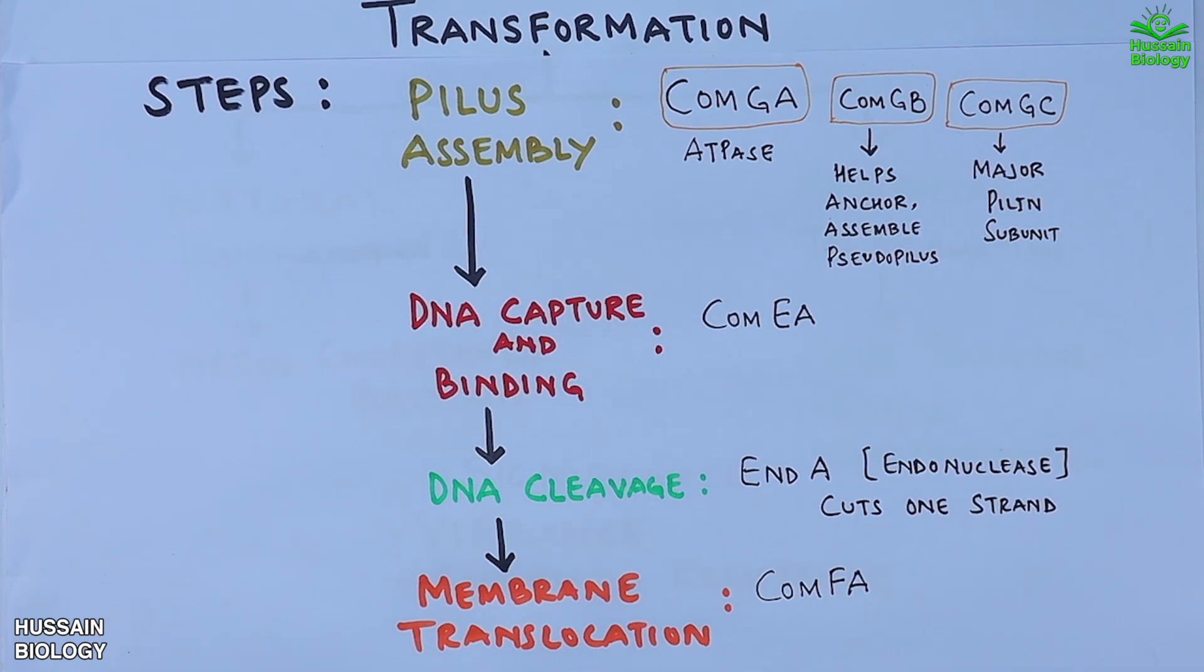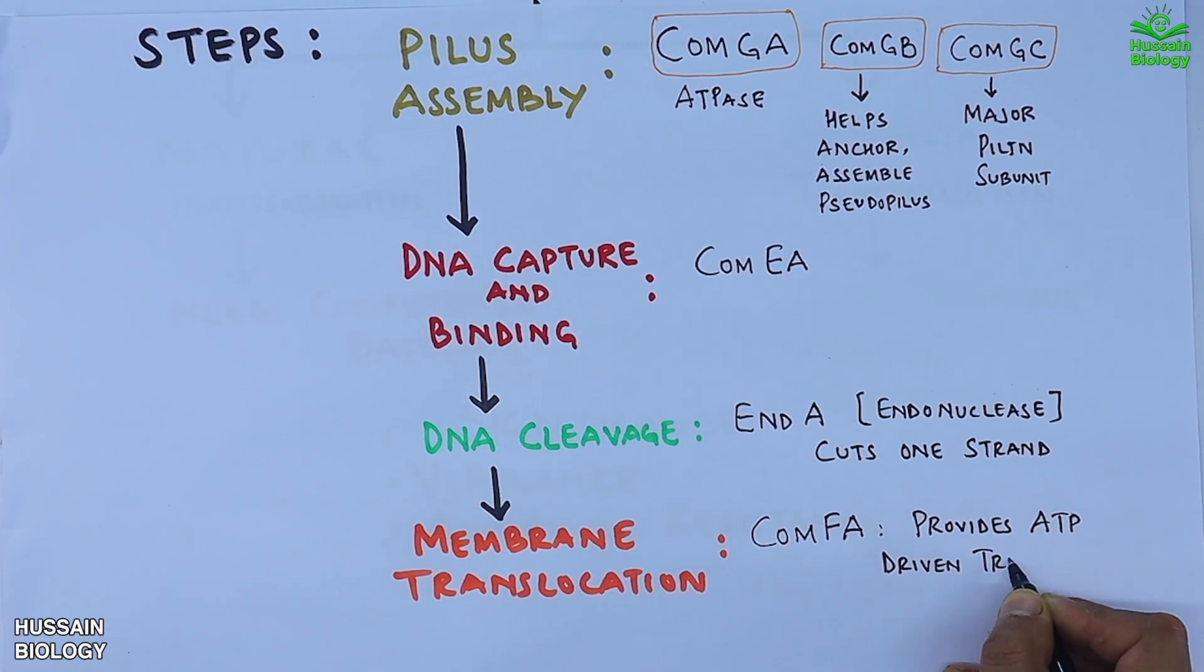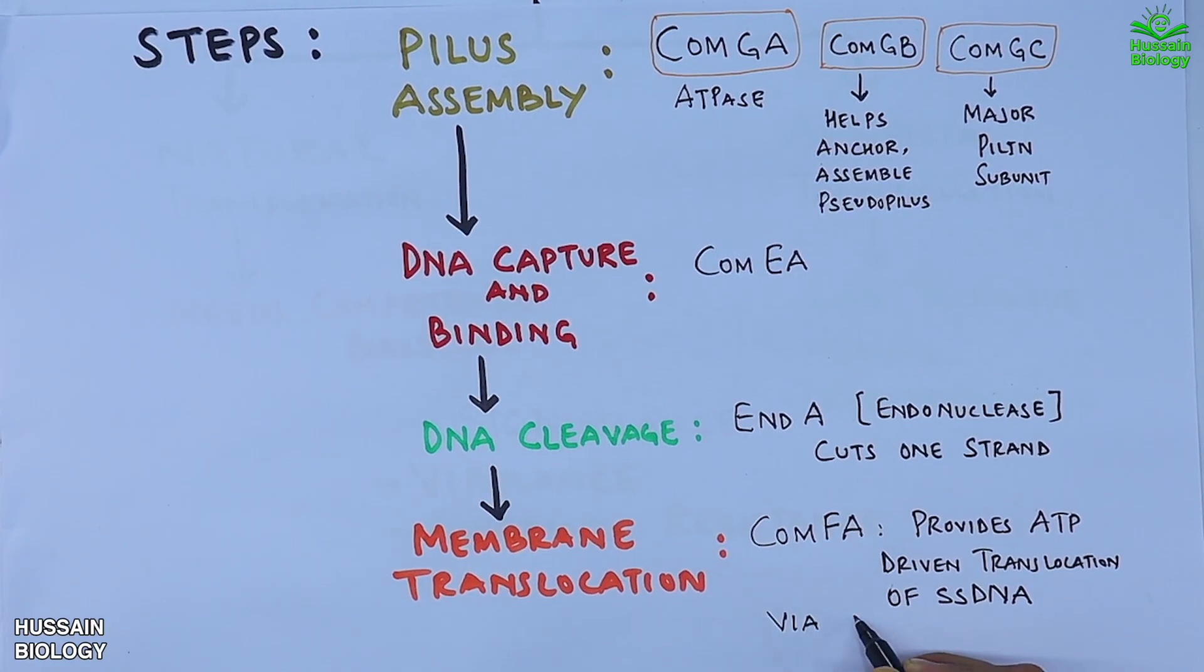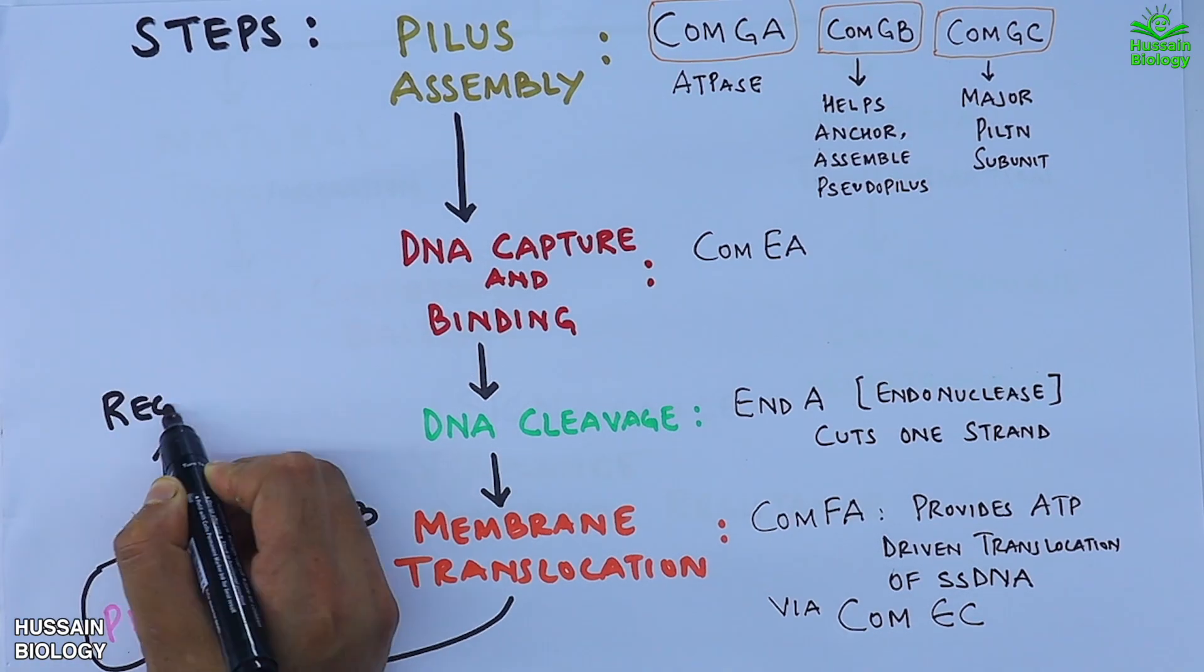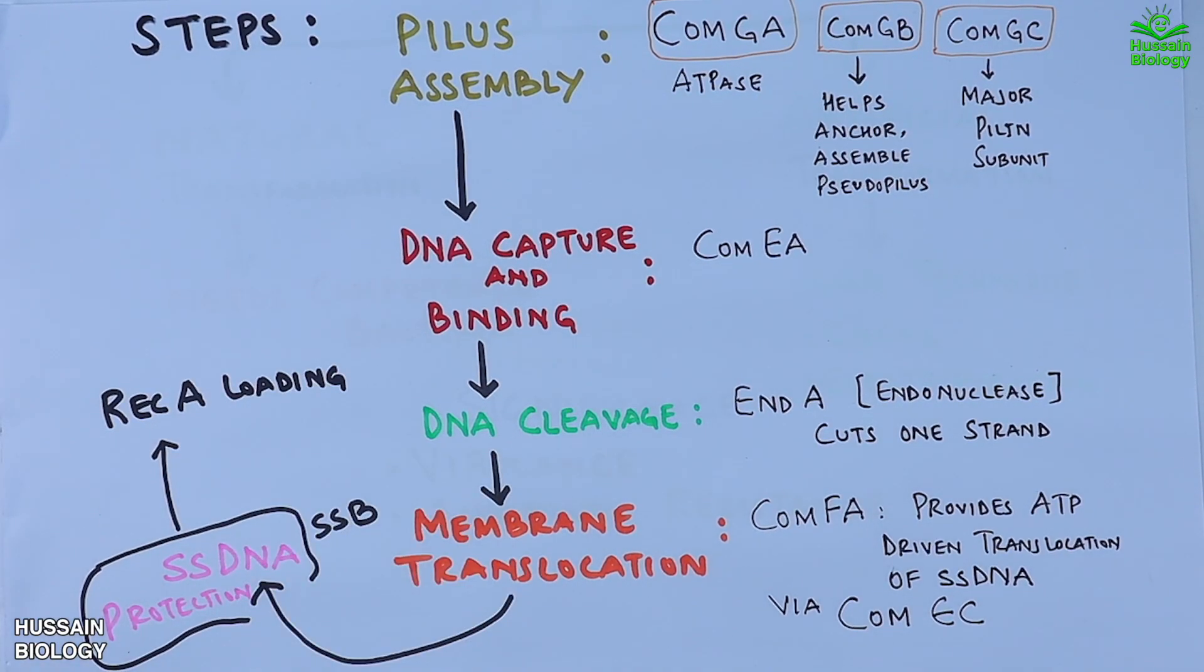Then we have ssDNA inside the cell which is protected by SSB proteins. Then we have RecA loading and finally homologous recombination. Now let's see the whole process in a detailed manner.